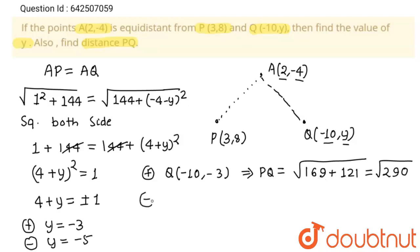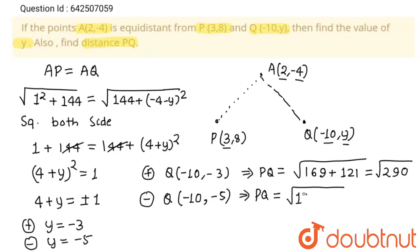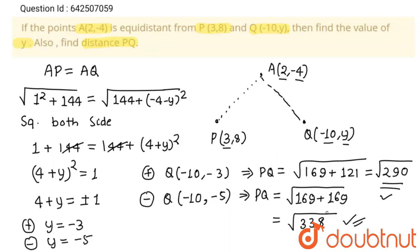Now taking the minus sign, the coordinates of Q will be (-10, -5). Distance PQ = √[(3 - (-10))² + (8 - (-5))²] = √[13² + 13²] = √[169 + 169] = √338. So these are the two values of PQ corresponding to the two values of y.